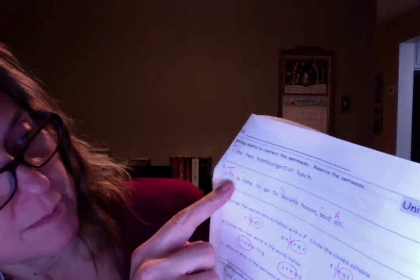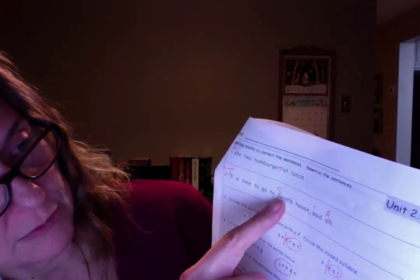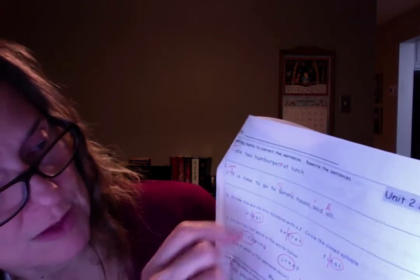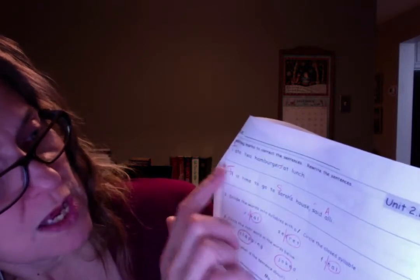Number two. It is time to go to Sarah's house, said Allie. You should have a capital I on it. Sarah needs a capital letter. Allie needs a capital letter. These are our names, right? We need a period at the end. We need quotation marks around what Allie said.